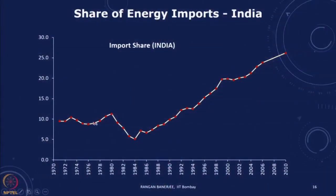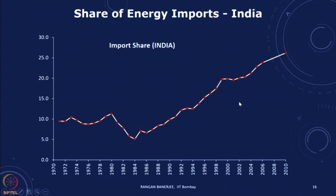Looking at India's import share, from the 1990s onward the percentage share of imports in overall energy supply has been monotonically increasing — this is not a good trend. We need to find substitutes for oil, and we have also recently been importing some proportion of coal. Even in the case of renewables, one strategy we have adopted is going for solar photovoltaics, but almost 90 percent of the solar cells and modules being installed are coming from imports, which also has implications for energy security.